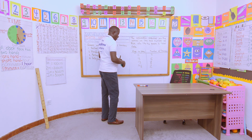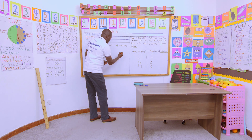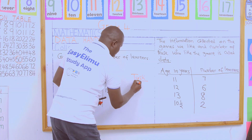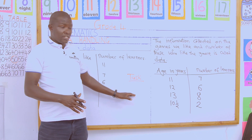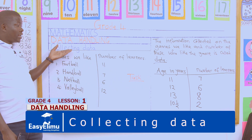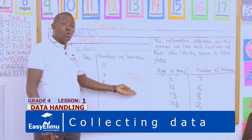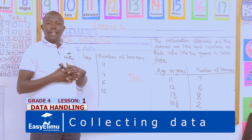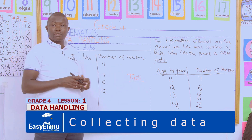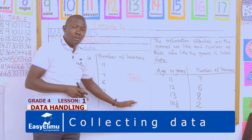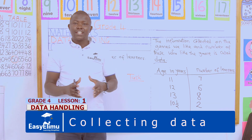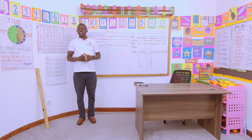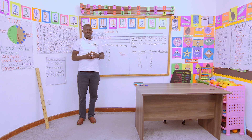Now I want to leave you with a task. Can you collect data on the following: task one — collect data on your favorite subjects. Discuss amongst yourselves, then tabulate it the way we have done it. How many like Mathematics? How many like English? Indicate the numbers. That is task number one — favorite subjects. Task two — collect data on your favorite songs, and these should be good gospel songs. Collect that data and we'll discuss in our next lesson.